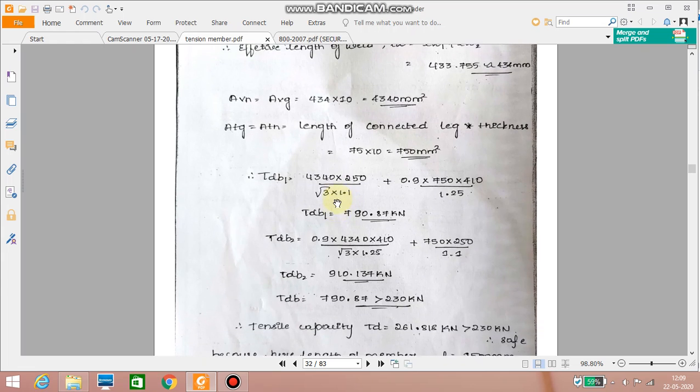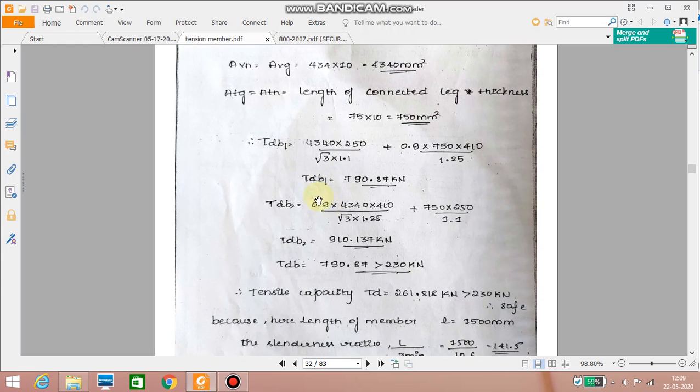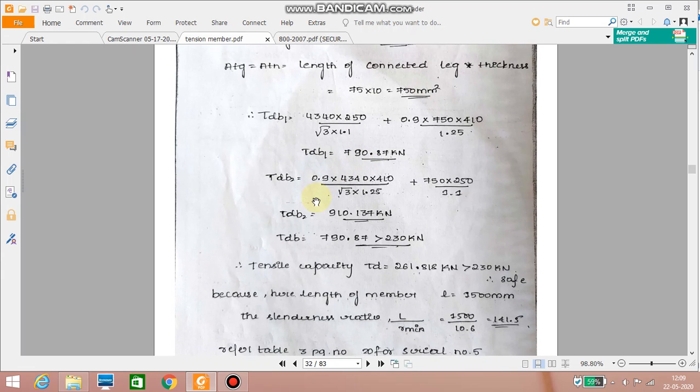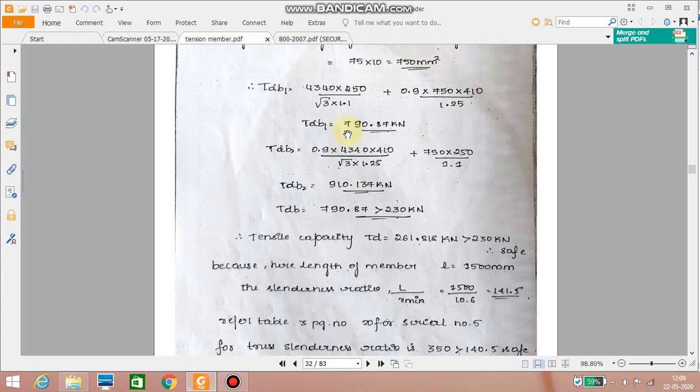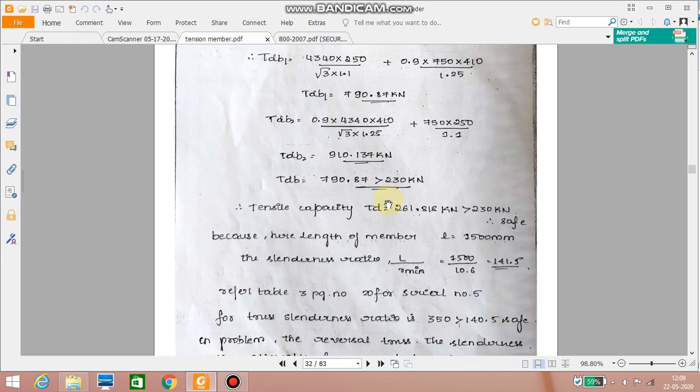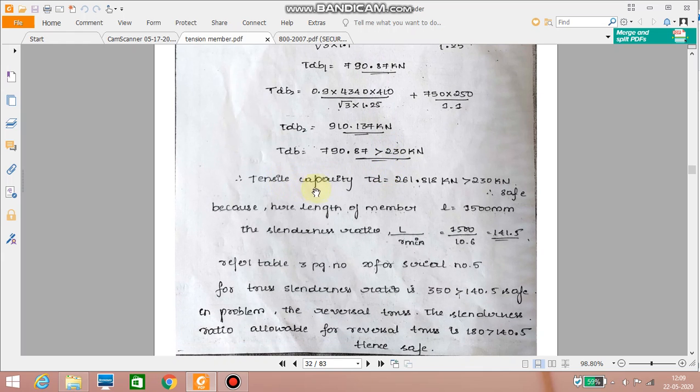You calculate TdB1 and TdB2. So upon calculation of TdB1 we get TdB1 equal to 790.87 kilonewton and TdB2 equal to 919.137 kilonewton. So here also the values out of these two the least value 790.87 kilonewton is again greater than 230 kilonewton. Therefore the tensile capacity is the least of these three values that is gross section yielding, net section rupture and block shear.